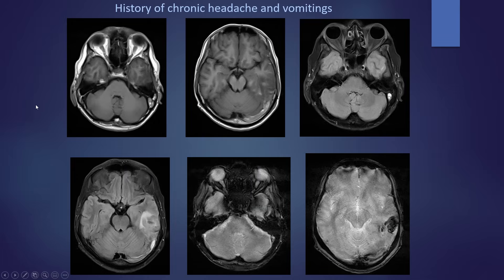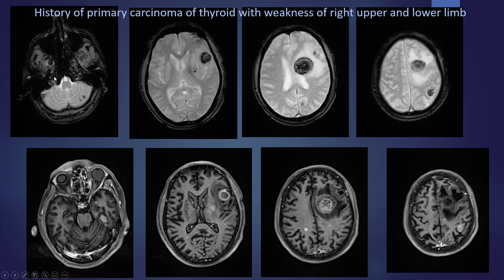A common case of chronic headache and vomiting shows a hyperintense area in the left temporal lobe with blooming on GRE and hyperintense signal in the left transverse and sigmoid sinus — a case of venous infarct due to cerebral venous sinus thrombosis. Another case of primary carcinoma of thyroid with right-sided weakness shows blooming areas in the left cerebellum, left frontal, and left frontoparietal lobes with significant perilesional edema, showing nodular, ring, and target pattern enhancement — consistent with hemorrhagic metastasis.